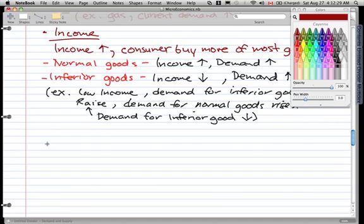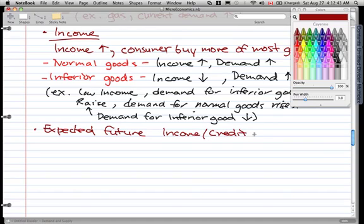Now the next thing is future income and credit—a simple concept of how it changes the demand curve. So, the expected future income and credit.